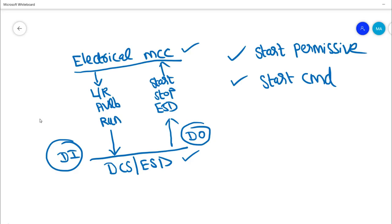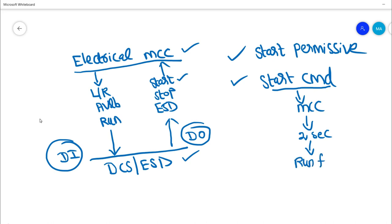Once the start command is issued, it goes to the MCC panel as a digital output. The DCS will then wait for approximately two seconds — some control system requirements may use only one second, but two seconds is used in this example as a minimal requirement. Once the motor physically starts, it will send a run feedback signal back to DCS. We can then confirm that the start command has reached the MCC panel, the motor has physically started, and we have received the run feedback signal.